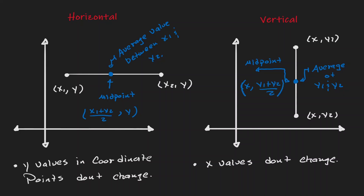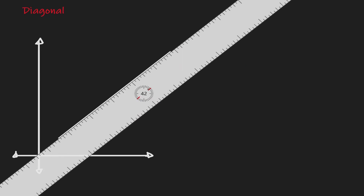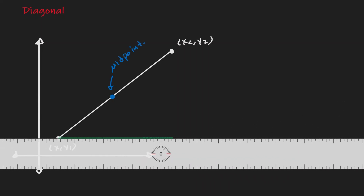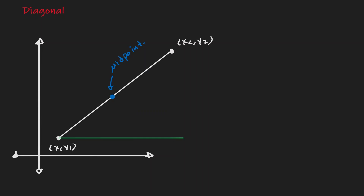Now that we have seen these two scenarios separately, let's consider a diagonal line. Let's call this value x1, y1 and let's call this value x2, y2. The question is: what is the coordinate point of the midpoint? Let's break this diagonal line into its horizontal distance and its vertical distance.